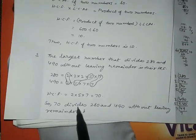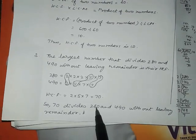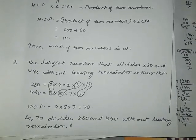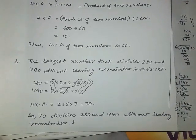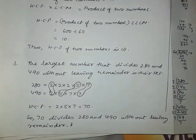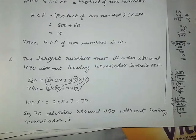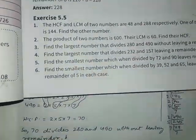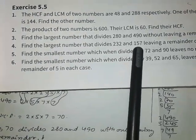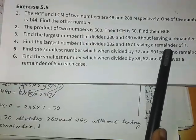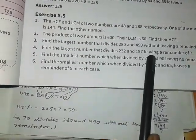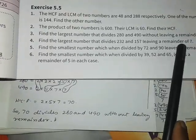I hope you understand this. You have to practice a lot, and when you read the question, be careful and read attentively. Question number four: find the largest number that divides 232 and 157 leaving a remainder of 7. We have to find the largest number that divides both and leaves remainder 7.